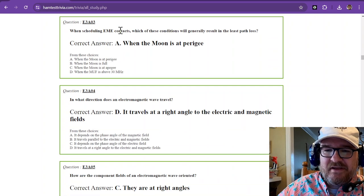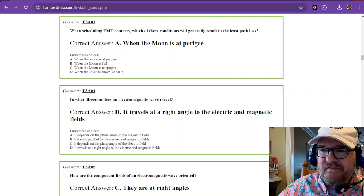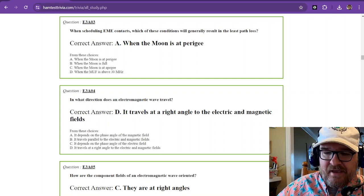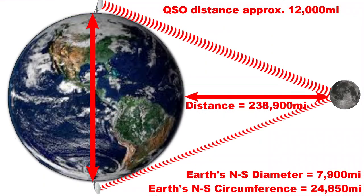Question number one, when scheduling EME contacts, Earth-Moon-Earth, which of these conditions will generally result in the least path loss? And that is when the Moon is at perigee. If we look back to this picture here, if the Moon is at perigee, it's closer to the Earth. Now, that's going to limit the amount of distance that you can travel, but if it's at perigee, you have a bigger target, it's closer, so there's less distance for your signal to travel, therefore less loss.